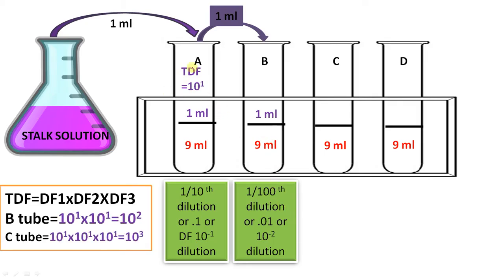Total dilution factor, we need to combine these two, multiply this dilution factor also. So for the B tube the total dilution factor will be 10 raised to 1 into 10 raised to 1, that is 10 raised to 2.